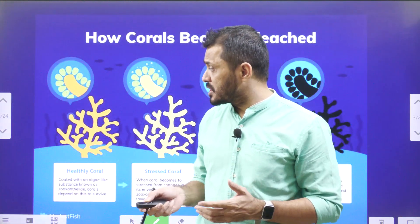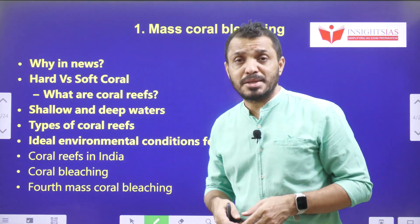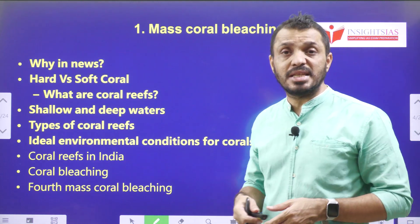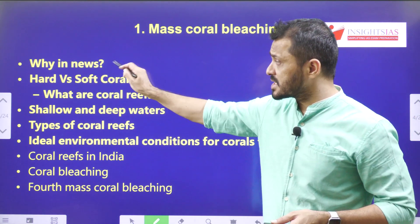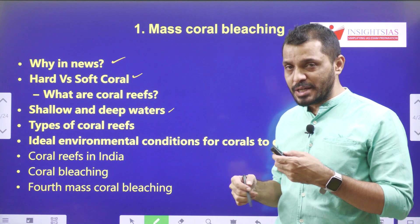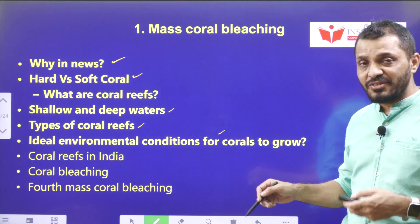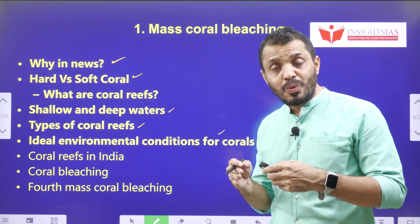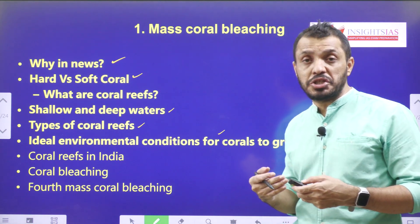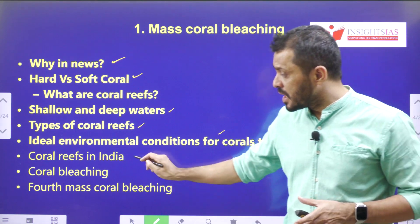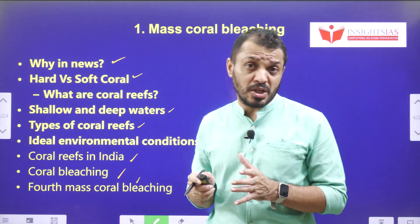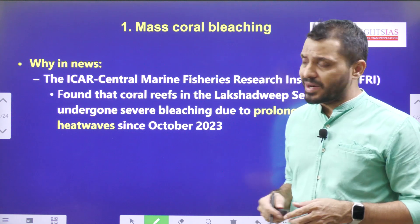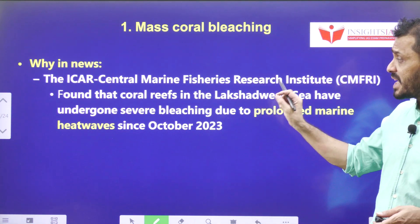Let's look at the syllabus mapping. This video is related to GS Paper 3, Environment. The components we'll cover are: hard versus soft coral, shallow versus deep waters, types of coral reefs, ideal environmental conditions required for coral reefs, the significance of coral reefs, global initiatives to conserve coral reefs, coral reefs in India, coral bleaching, and mass coral bleaching.